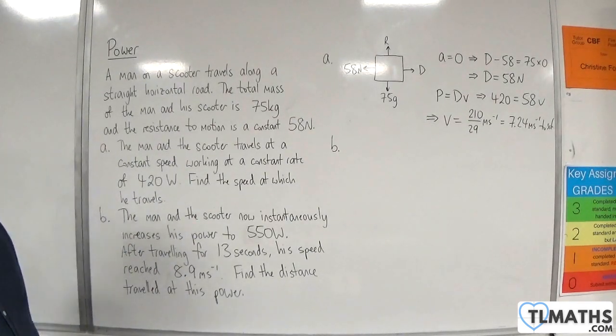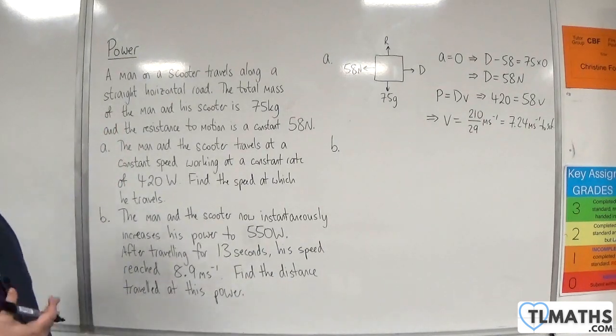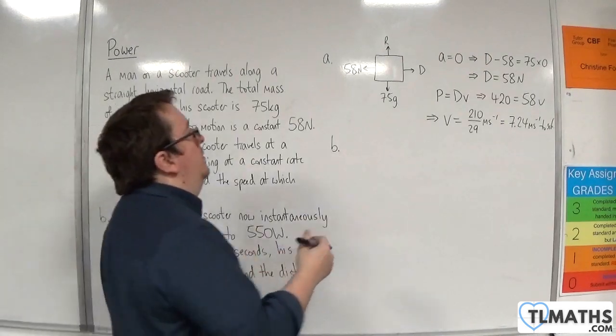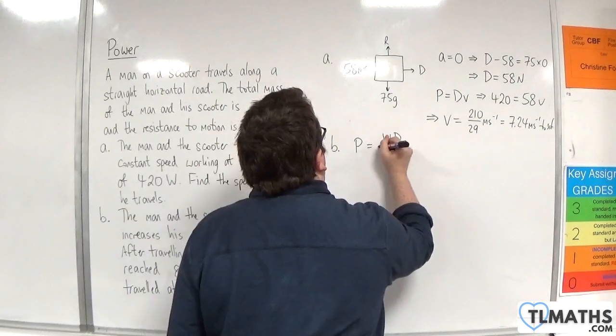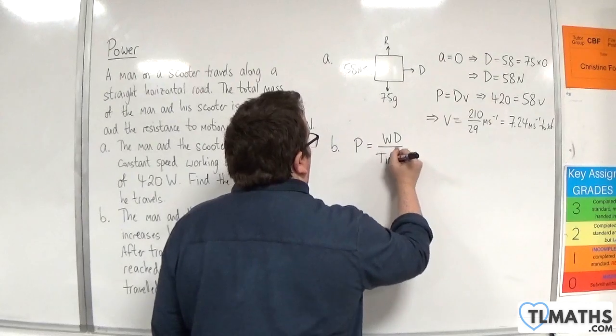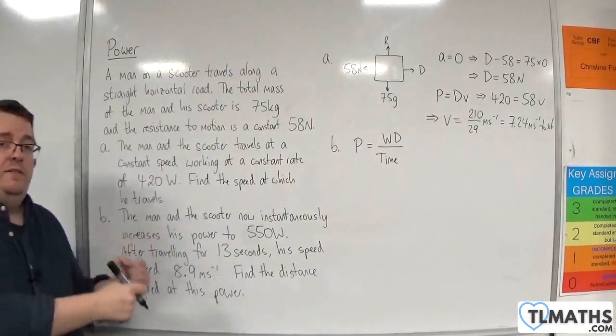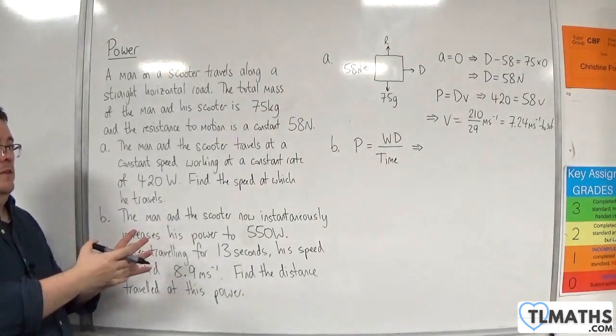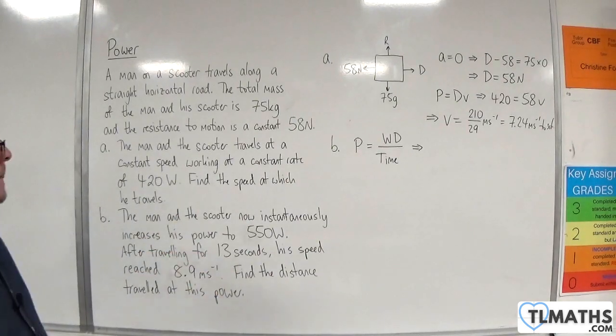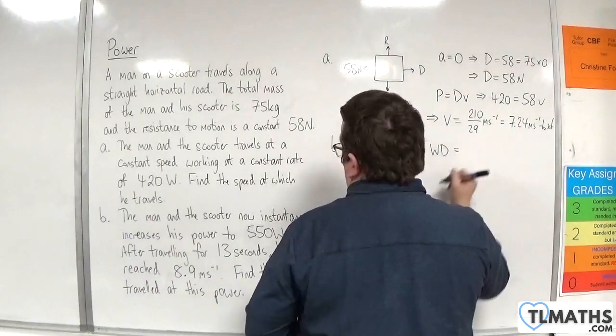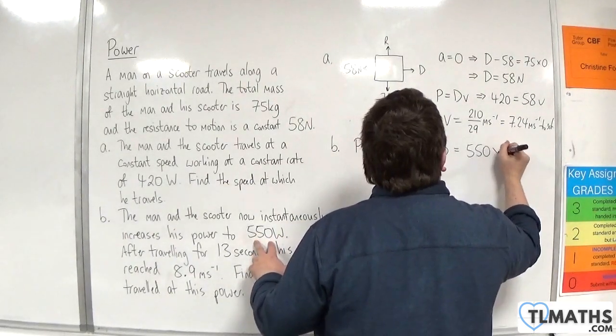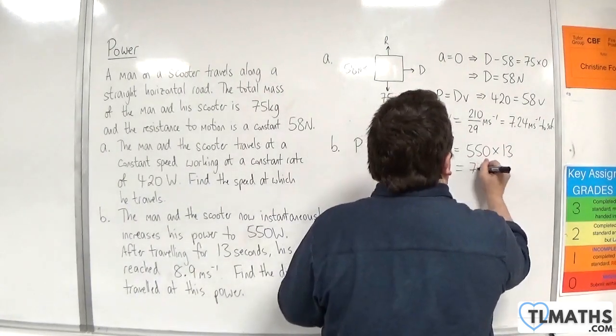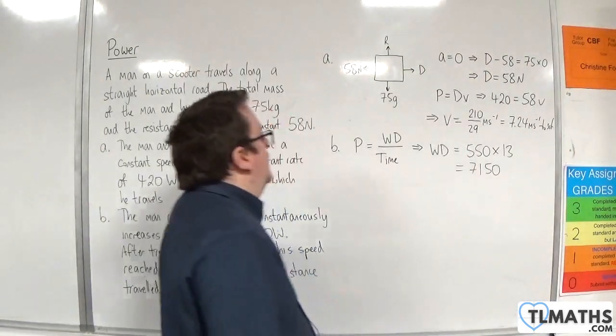Instead we're going to use an energy method. The first thing is, we're going to need to work out the work done by the driving force. Remember, power is equal to the work done divided by the time. So the work done by the driving force is going to be equal to power from the driving force times by the time, which is 13 seconds. So the work done that I want to calculate is 550 watts times by 13. So 550 times by 13 is 7,150.